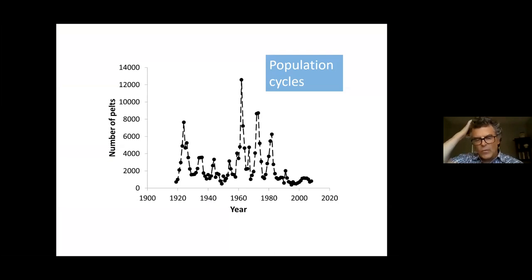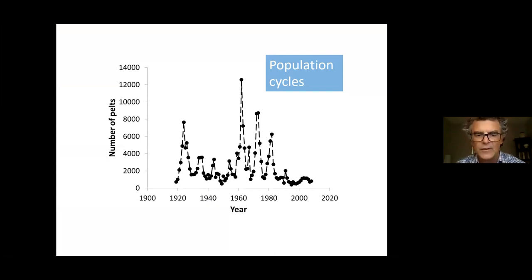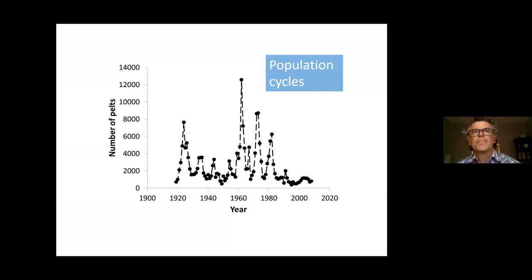Lynx are very well known as a species that cycles with the snowshoe hare — an 8 to 11 year, on average 10-year cycle — because the lynx is an obligate predator of snowshoe hares. They're in this density-dependent relationship that's reinforced by the specialized nature of the lynx.